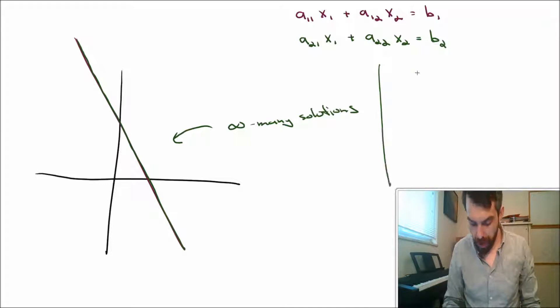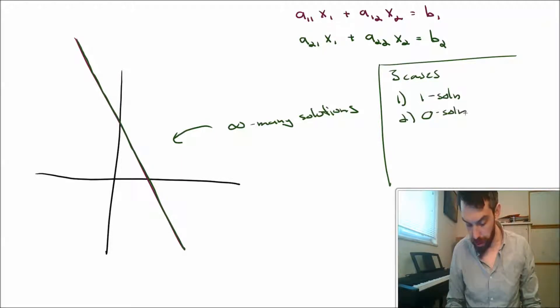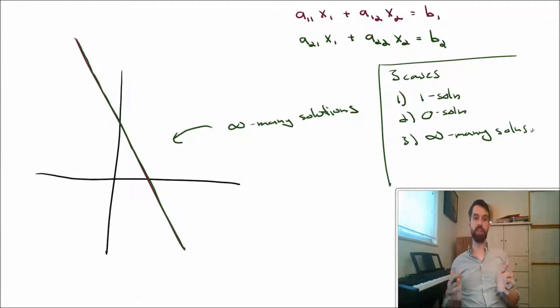And so what I'm left with is I have three different cases. I have the one solution. I have the zero solution. And I have the infinitely many solutions. So we've seen we have these three different possibilities: zero solutions, exactly one solution, or infinitely many solutions.